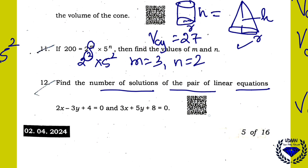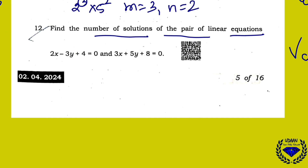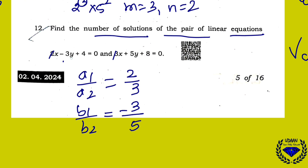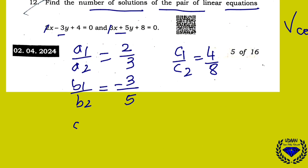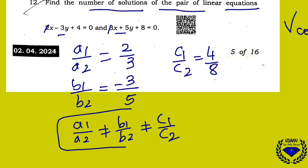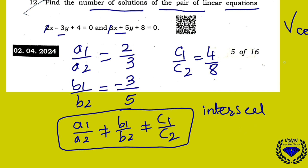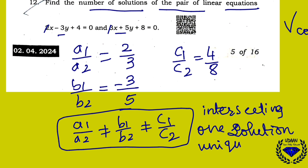Find the number of solutions of the pair of linear equations. Using the condition: a1/a2 = 2/3, b1/b2 = −3/5, c1/c2 = 4/8. Since a1/a2 ≠ b1/b2 ≠ c1/c2, all three are not equal, so the lines are intersecting. Therefore there is only one unique solution.